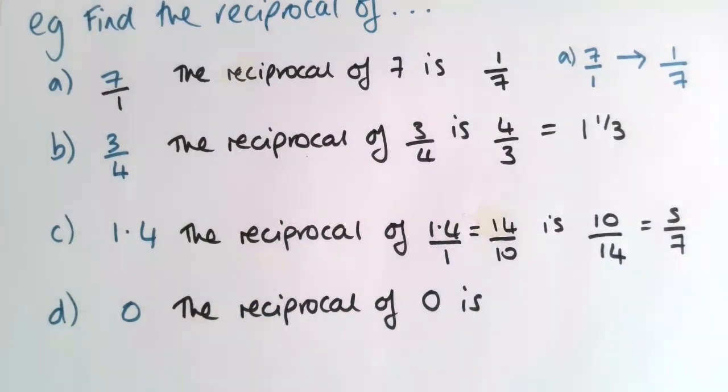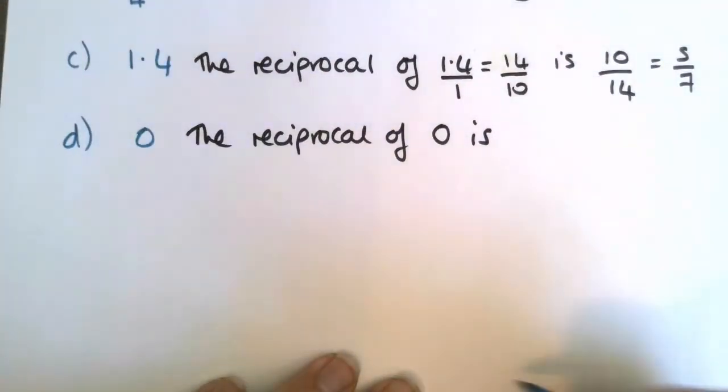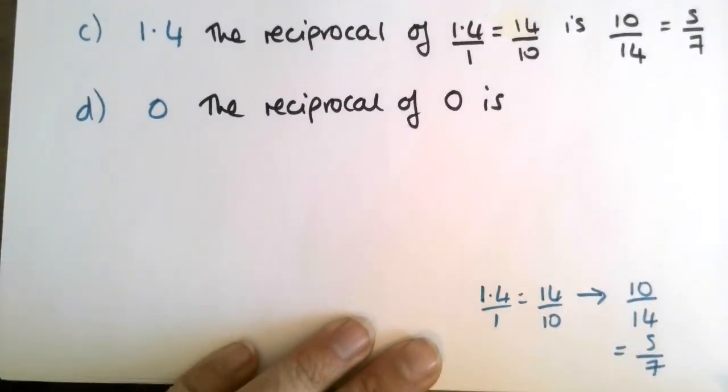If I was doing my little arrow method for that, I'll do it, but I've got room down at the bottom of the page. If I was doing the arrow method, I would be writing 1.4 over 1 equals 14 over 10 goes to 10 over 14, which is equal to 5 sevenths. Yeah, I think that's a little bit clearer.